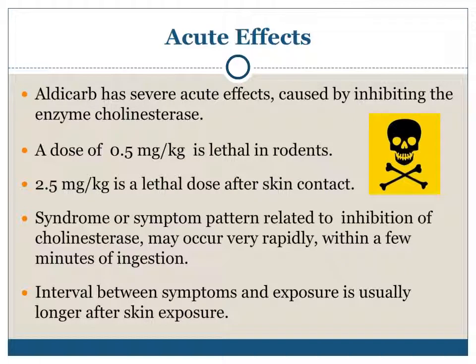Acute effects. Aldicarb has severe acute effects caused by inhibiting the enzyme cholinesterase. A dose of 0.5 mg is lethal in rodents; 2.5 mg is a lethal dose after skin contact. The syndrome or symptom pattern related to inhibition of cholinesterase may occur very rapidly, within a few minutes of ingestion. The interval between symptoms and exposure is usually longer after skin exposure.